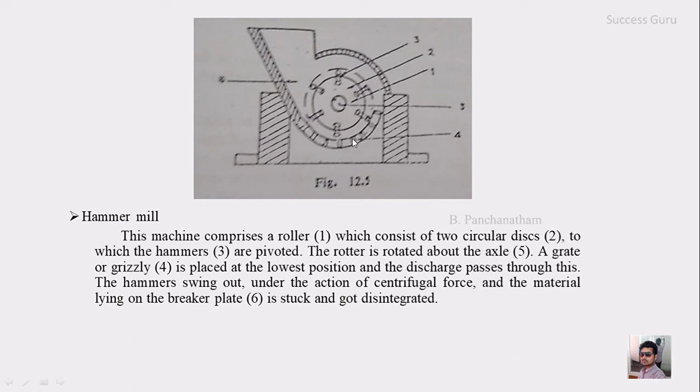The hammer will swing out under the action of centrifugal force. When the disc is rotated, the hammer will move freely due to the rotation and due to this rotation, the centrifugal action of the hammer will hit the material which is on the breaking plate. The hammer will break it due to the centrifugal action. This is how the hammer mill is working.